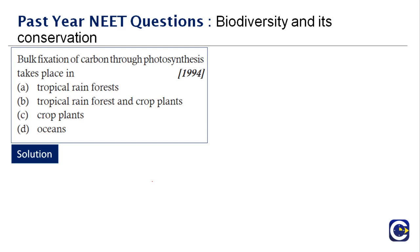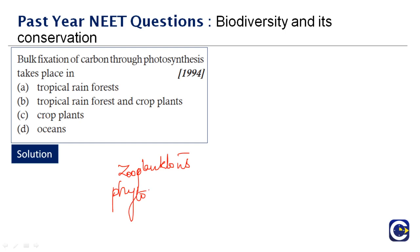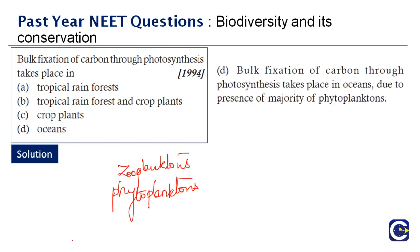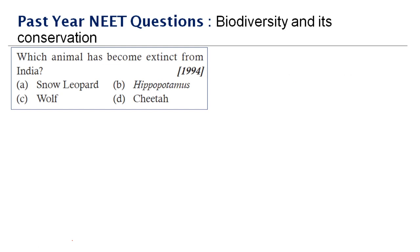Next question, asked in 1994: bulk fixation of carbon through photosynthesis takes place in blank. Bulk means abundant. The major bulk fixation of carbon occurs in oceans, because we have zooplankton and phytoplankton there, which are the major carbon fixation organisms. Therefore, the right answer is option D — oceans.